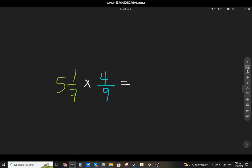Let's have another example. Last example na tayo. So, 5 and 1/7 times 4/9. Gawin mo ng improper fraction ito. So, 7 times 5, that will be 35. Plus 1, that will be 36. Copy mo ng 7.